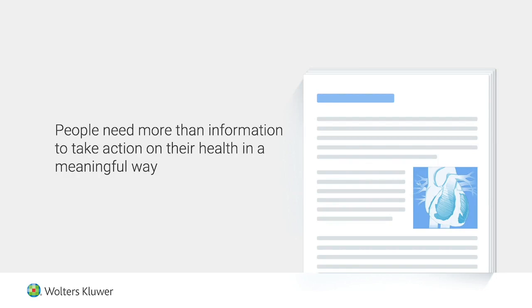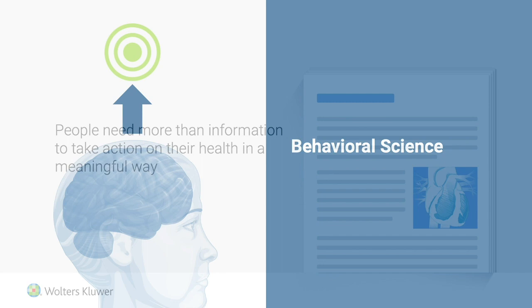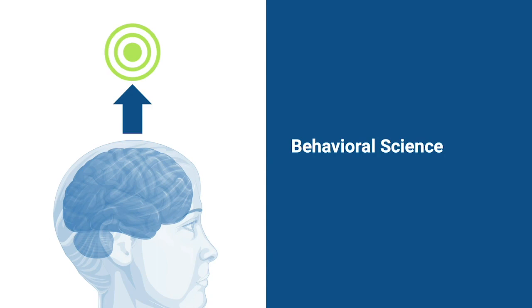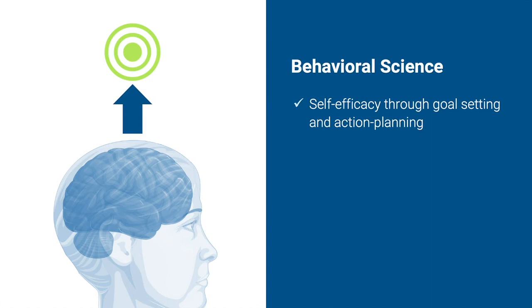So, switching topics a little bit, we talked about that we have multimedia and then we also talk about the behavioral economics side. And so, we know, based on behavioral science and particularly behavioral economics, that people need more than just information to act on their health in a meaningful way. So, with EMI, we don't tell a patient what to do, we tell them the why behind it. We provide actions they can take to change their situation and we acknowledge situations where they might fail. When we develop programs, there are four elements that we build from. The first element we focus on is self-efficacy and we do this through goal setting and action planning.